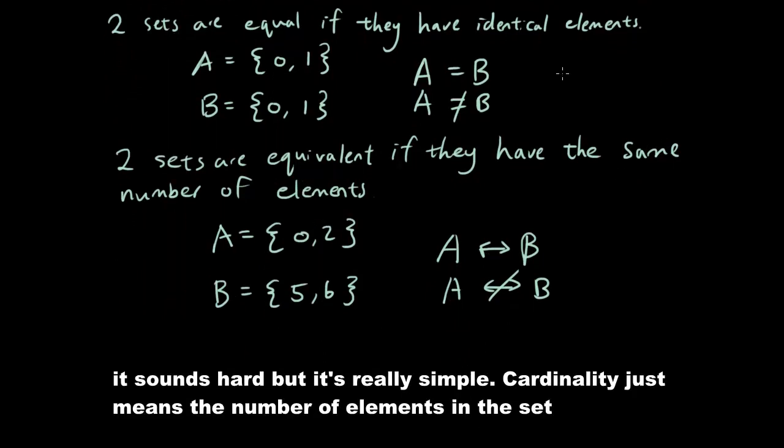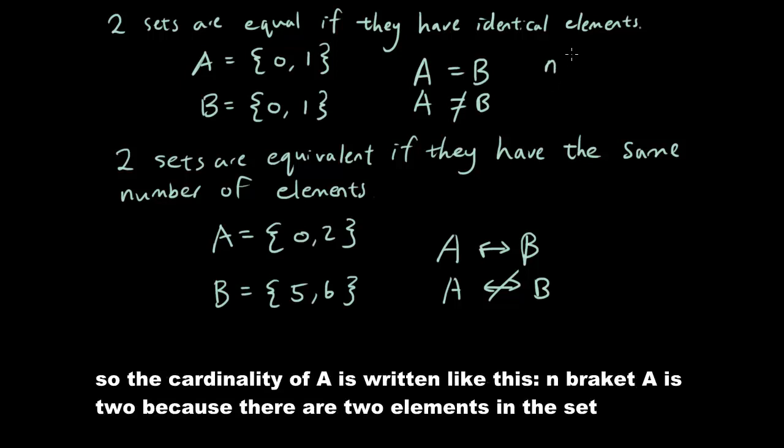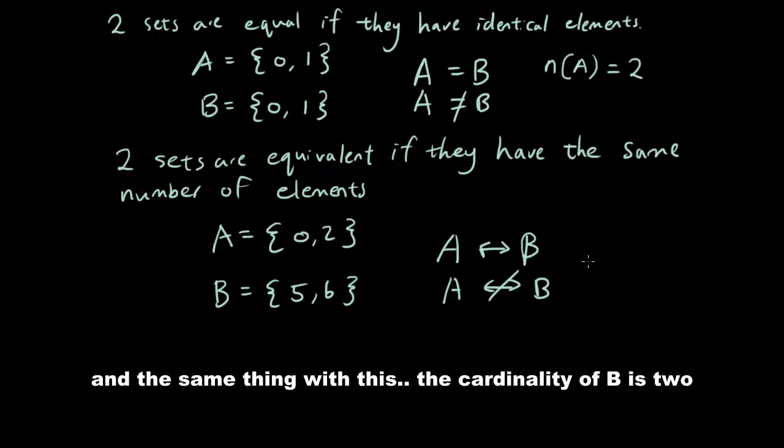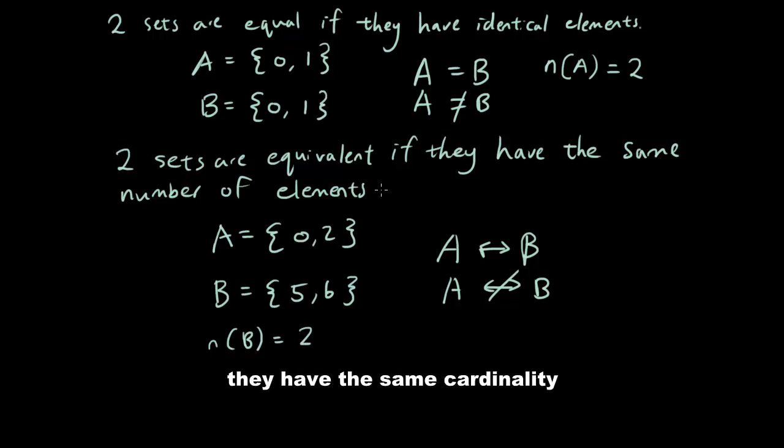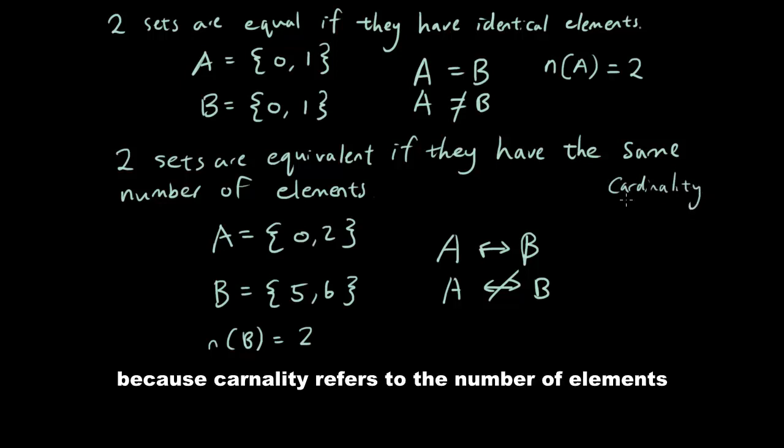Cardinality is a very simple concept. It sounds hard but it's really simple. Cardinality just means the number of elements in the set. So the cardinality of A is written n(A) = 2 because there are two elements in the set. Two sets are equivalent if they have the same cardinality.